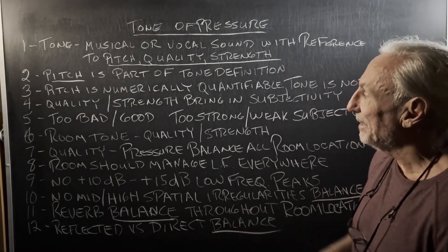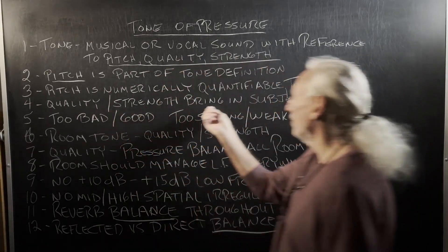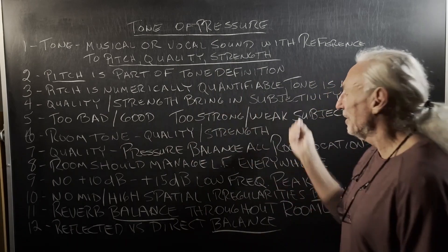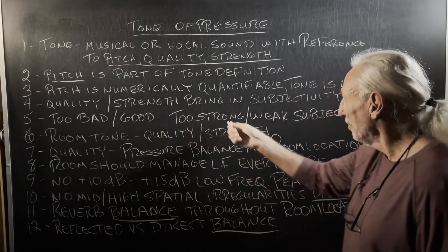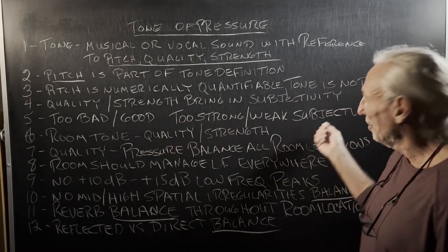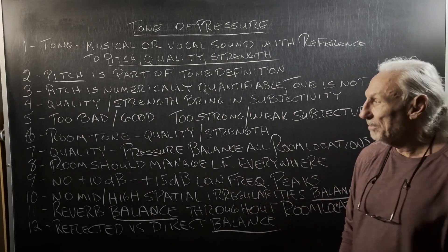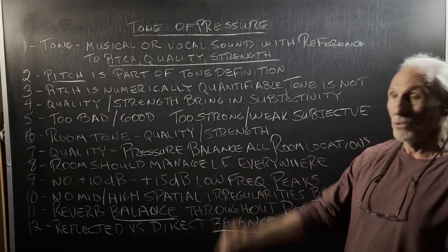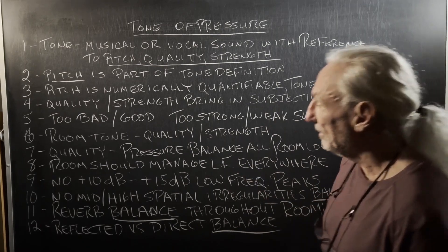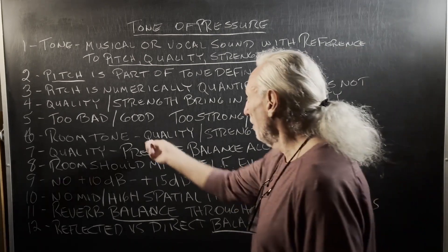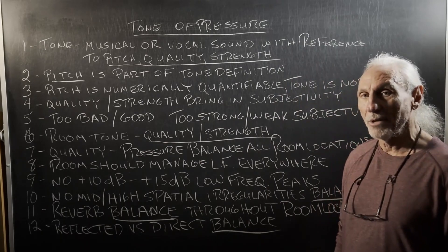So we have this balancing act. Quality and strength bring in the subjectivity of it — too bad, too good, too strong, or too weak. Those are subjective terms. That's what you hear people say: too much, too strong, whatever it is. Room tone is a balance between that quality and strength.